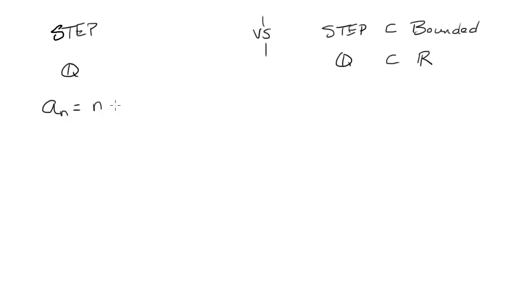So if we think of a sequence of rational numbers that are approaching an irrational number, if I just had the rationals, it's not a convergent sequence. It's Cauchy, but it's not convergent.